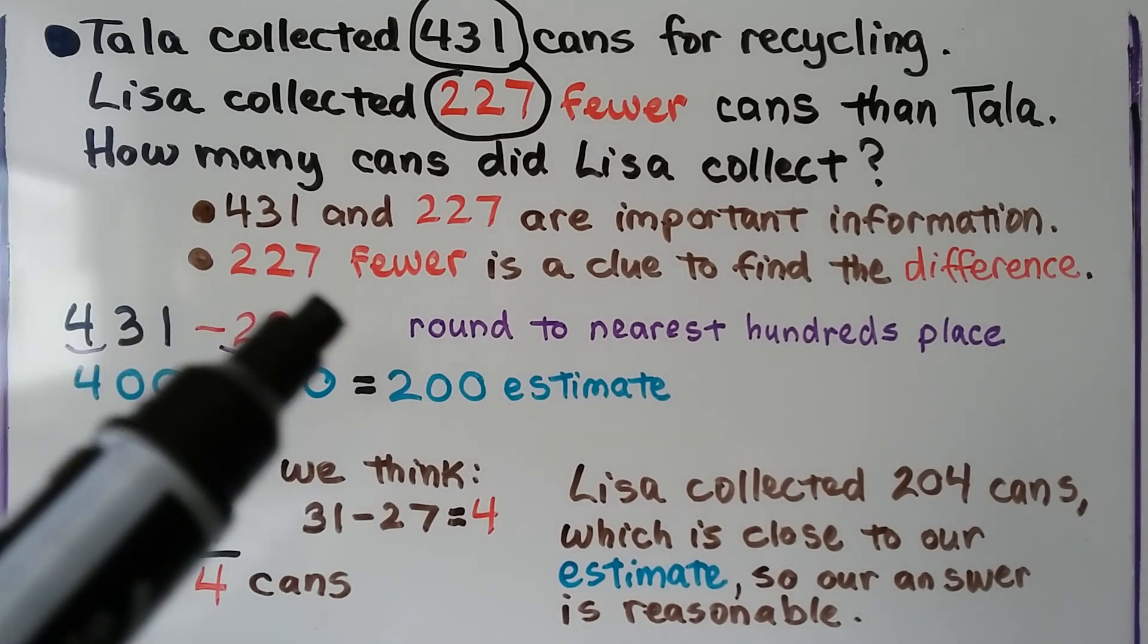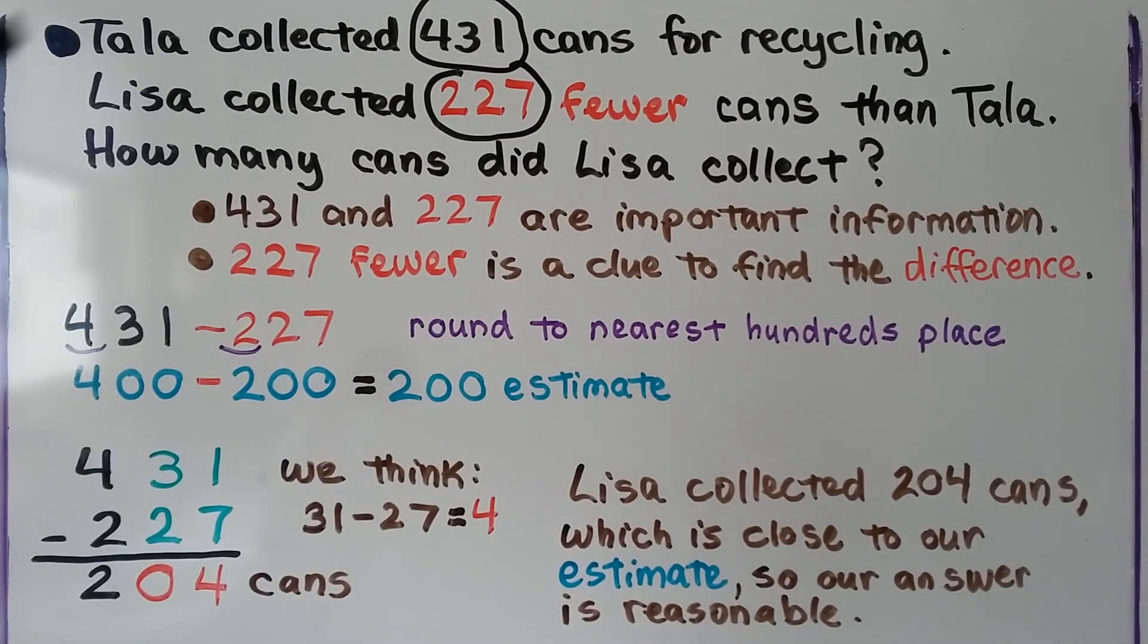The 227 fewer is a clue to find a difference. So we need to find the difference between 431 and 227. The difference is an answer in a subtraction problem, so we know we need to subtract.